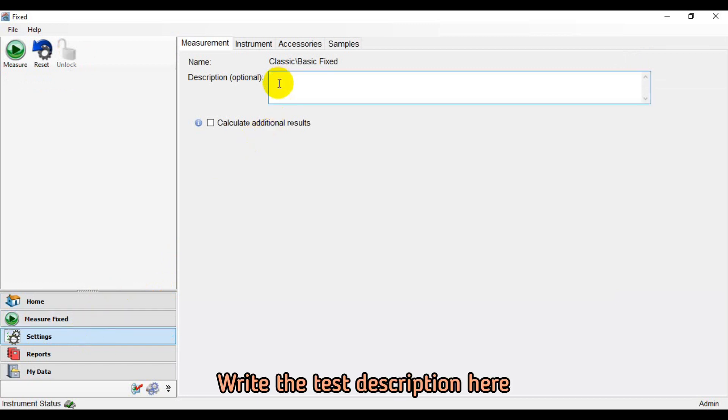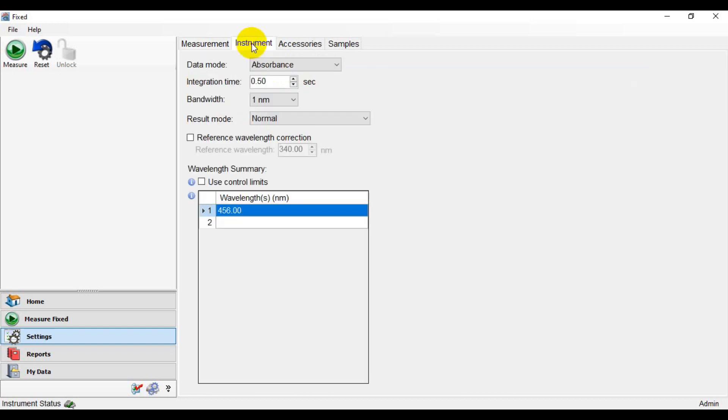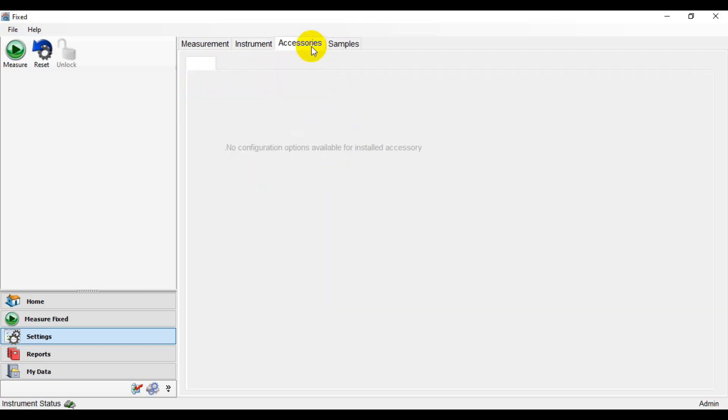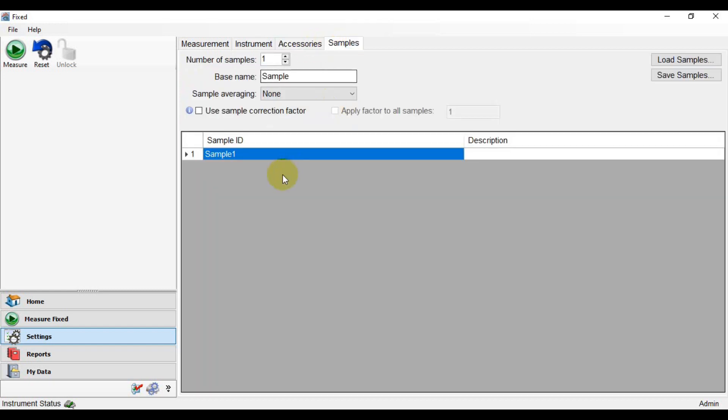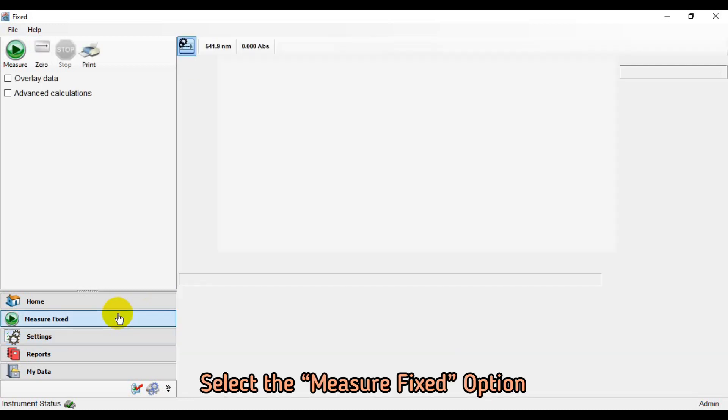Write the test description here. Now select the UV wavelength at 315 nm. Type the sample name here. Select the Measure Fixed option.